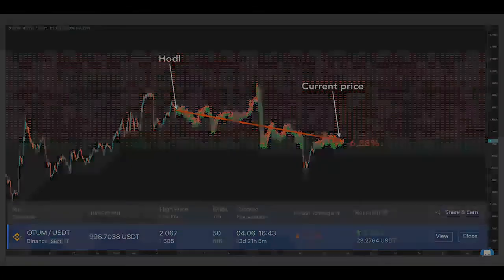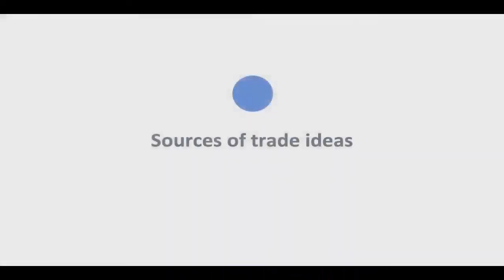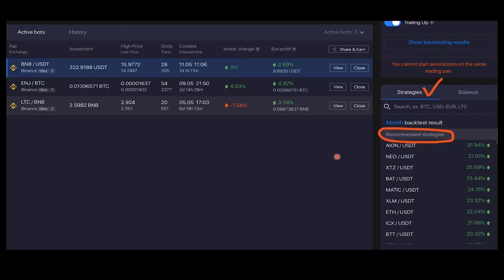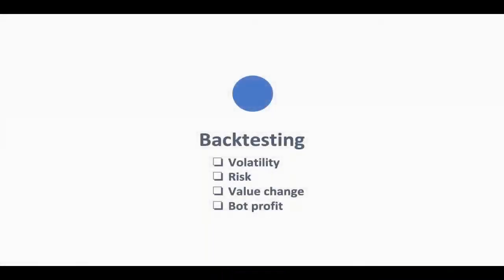Sources of trade ideas: first is Recommended Strategies, which we've already covered. The second is backtesting: it takes historical prices and simulates bot performance as if you had launched it at some point in the past. It accounts for volatility, risk, and bot profit.